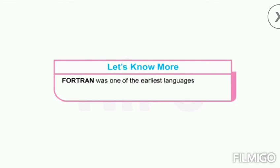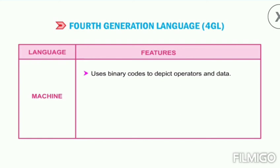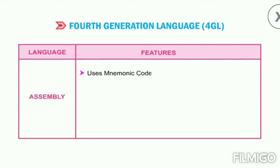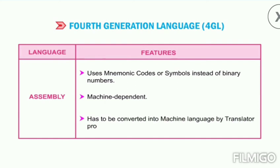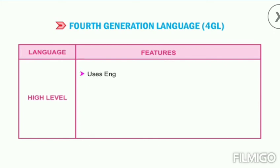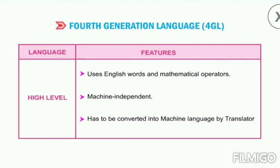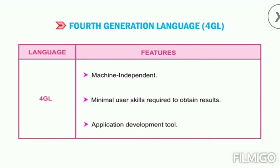Fortran was one of the earliest languages and was designed for scientists and engineers. COBOL was designed for business users. To summarize: machine language uses binary codes, is machine dependent, and is the only language directly understood by a computer. Assembly language uses mnemonic codes or symbols instead of binary numbers, is machine dependent, and must be converted to machine language by assemblers. High-level languages use interpreters and compilers, are machine independent, and require minimal user skills to obtain results.